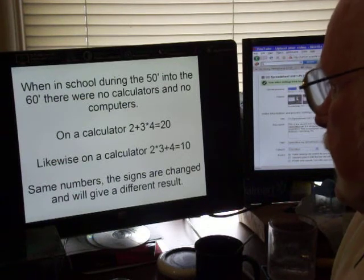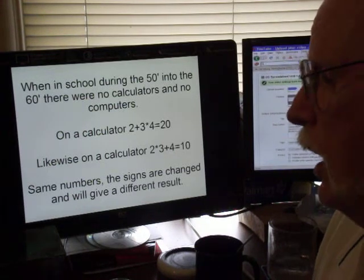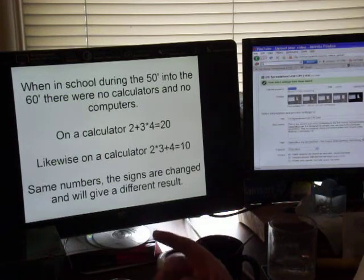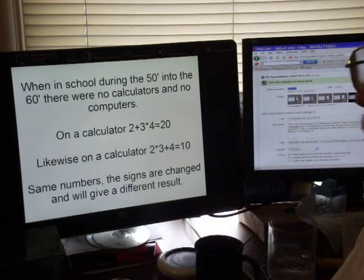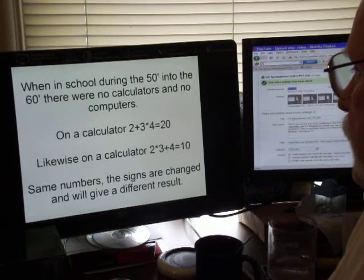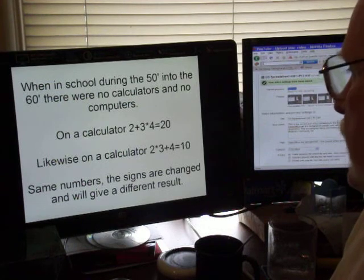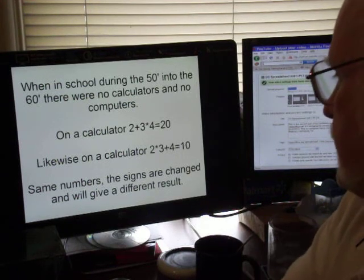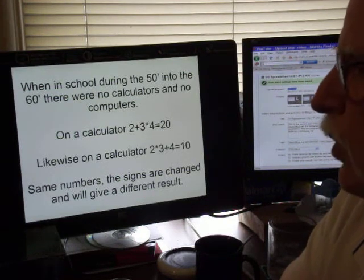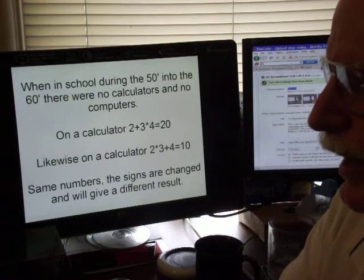Likewise, on a calculator it would come up the same way. However, if we just move the signs around and have 2×3, now we have a six plus four. Now the same set of numbers would equal ten. As you can see, just changing the signs around for what we want to take place is going to change the answer.